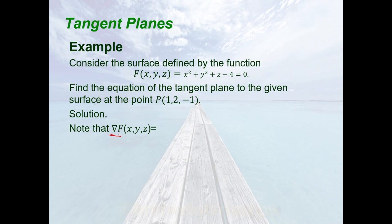For the partial derivative of f with respect to x, we treat y and z as constants, giving 2x. For the partial derivative of f with respect to y, x and z are treated as constants, giving 2y. For the partial derivative of f with respect to z, x and y are treated as constants, giving 1. Hence, the gradient of f equals the vector (2x, 2y, 1).